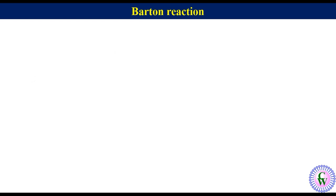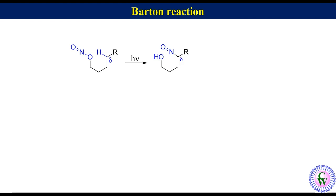Let's start with the general introduction. In a Barton reaction, an alkyl nitrite with delta hydrogen under photochemical condition gets converted to delta nitroso alcohol, which tautomerizes to the corresponding oxime.